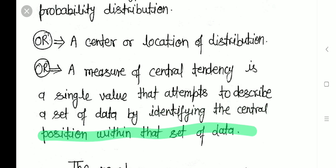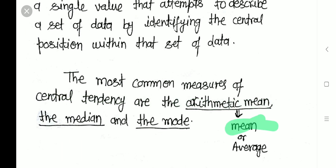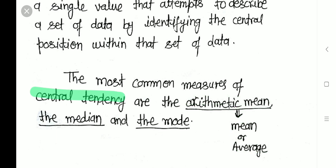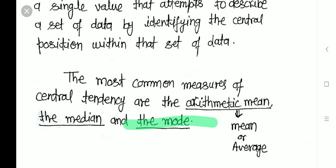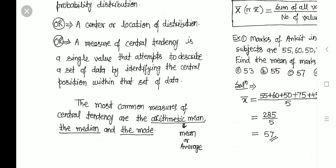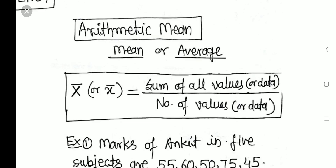A measure of central tendency is a single value that attempts to describe a set of data by identifying the central position within that set. The most common measures of central tendency are the arithmetic mean (also known as mean or average), the median, and the mode. Today we are going to start with the arithmetic mean.